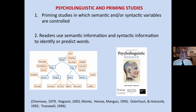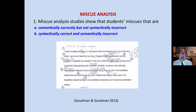Psycholinguistic and priming studies, in which semantic or syntactic variables were controlled — done in a variety of different ways — show that readers use semantic information and syntactic information to identify or predict words. A variety of studies in these areas have demonstrated that we use these things.